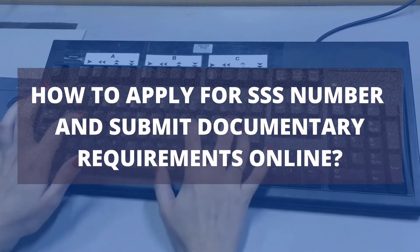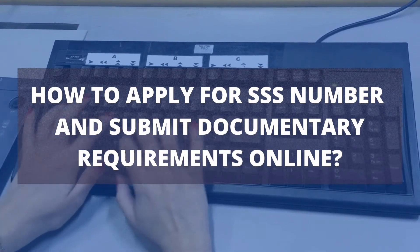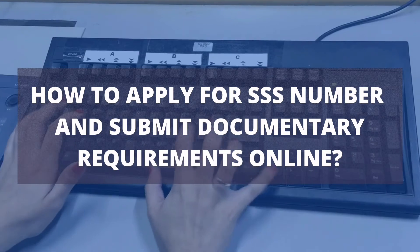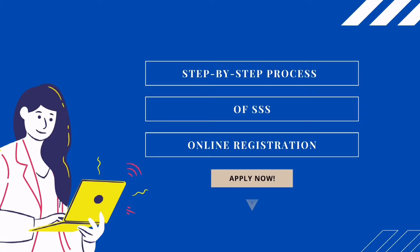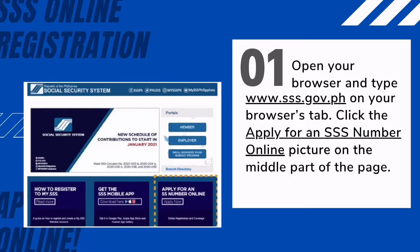How to apply for an SSS number and submit documentary requirements online. Don't have an SSS number yet? Don't worry — you can apply for an SS number online and immediately get it after you fill out the form. Likewise, you can submit your supporting documents online as well. Learn with us the step-by-step process on how to register online.